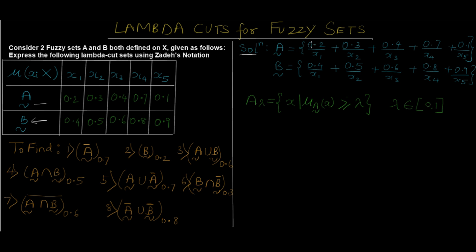Fuzzy set A is written as 0.2/X1 + 0.3/X2 + 0.4/X3. Keep in mind this is not a division operation — the slash is just a delimiter; there's no actual division going on. Similarly, fuzzy set B is formed as 0.4/X1 + 0.5/X2.